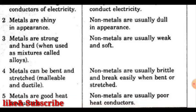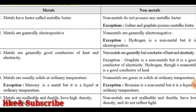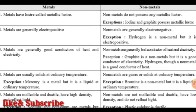Fifth: metals are good heat conductors whereas non-metals are usually poor heat conductors. You can also write that metals are usually solid at ordinary temperature, with the exception that mercury is a metal but is liquid at ordinary temperature. For non-metals: they are gases or solids at ordinary temperature, with the exception that bromine is a non-metal but is liquid at ordinary temperature.